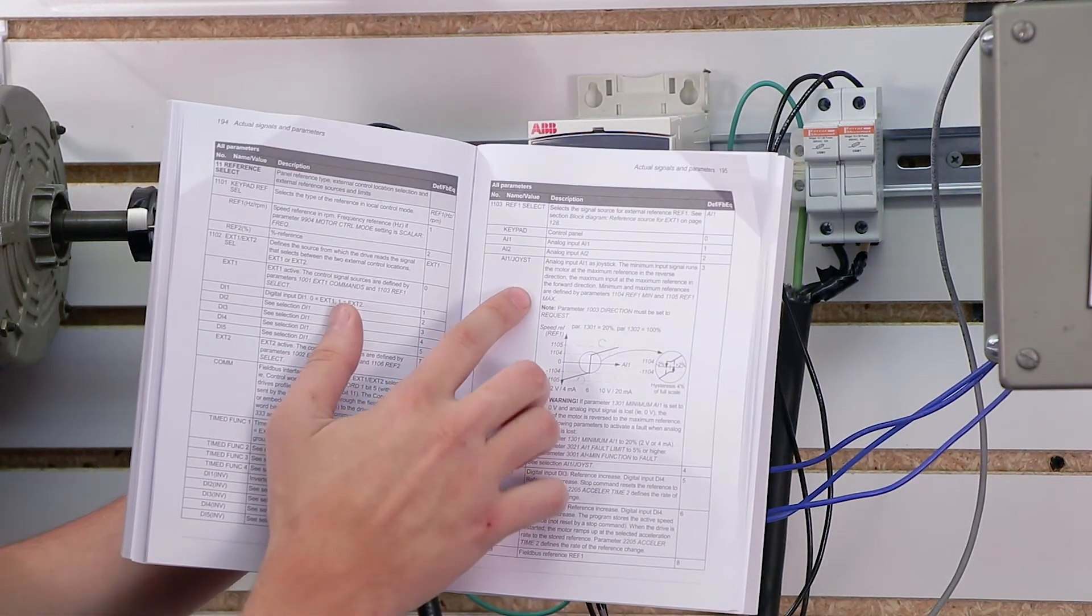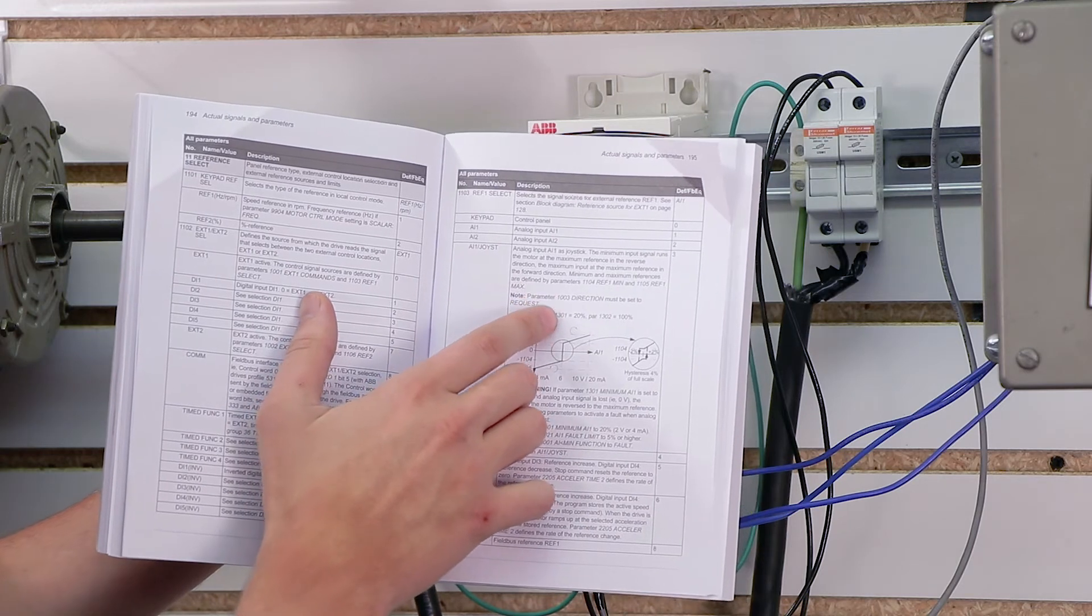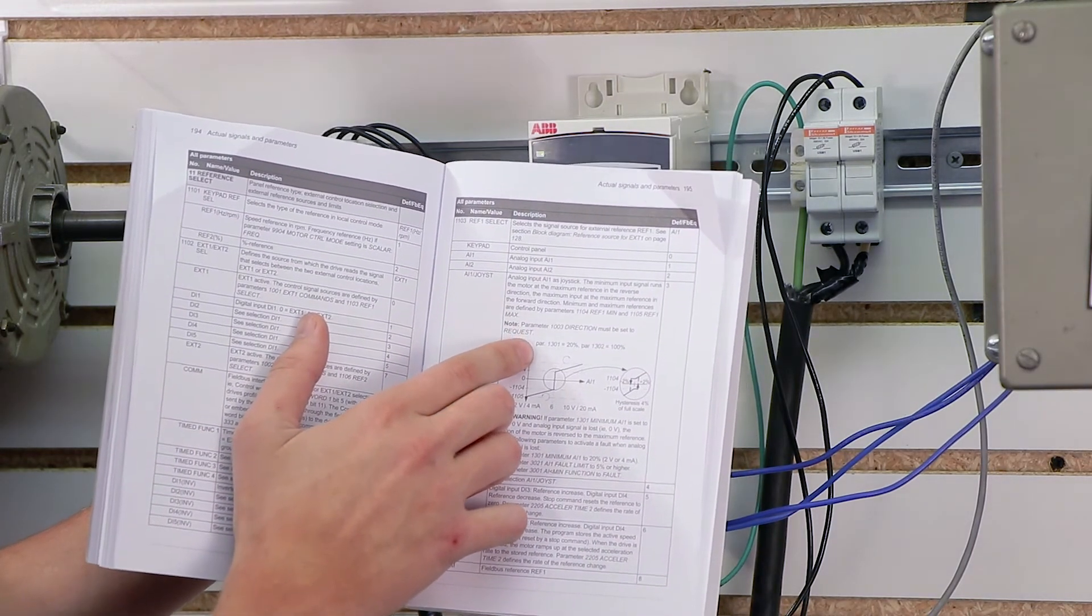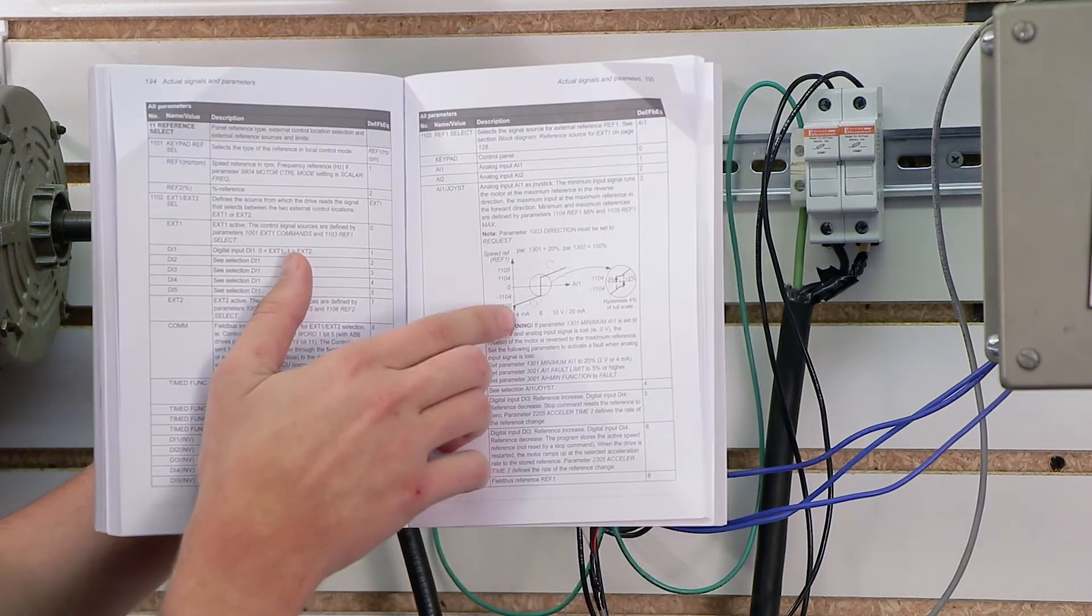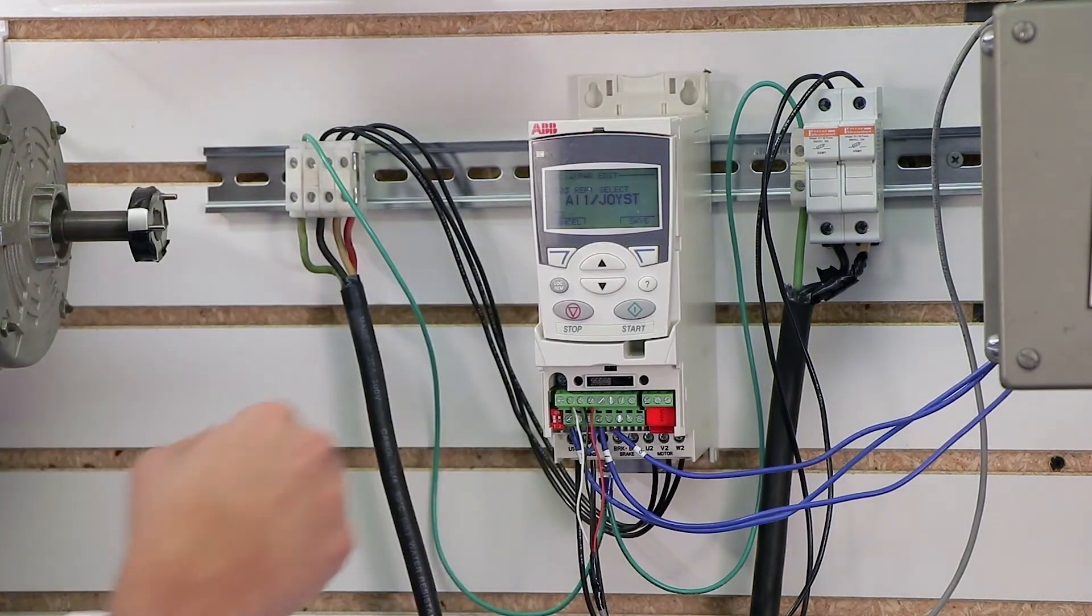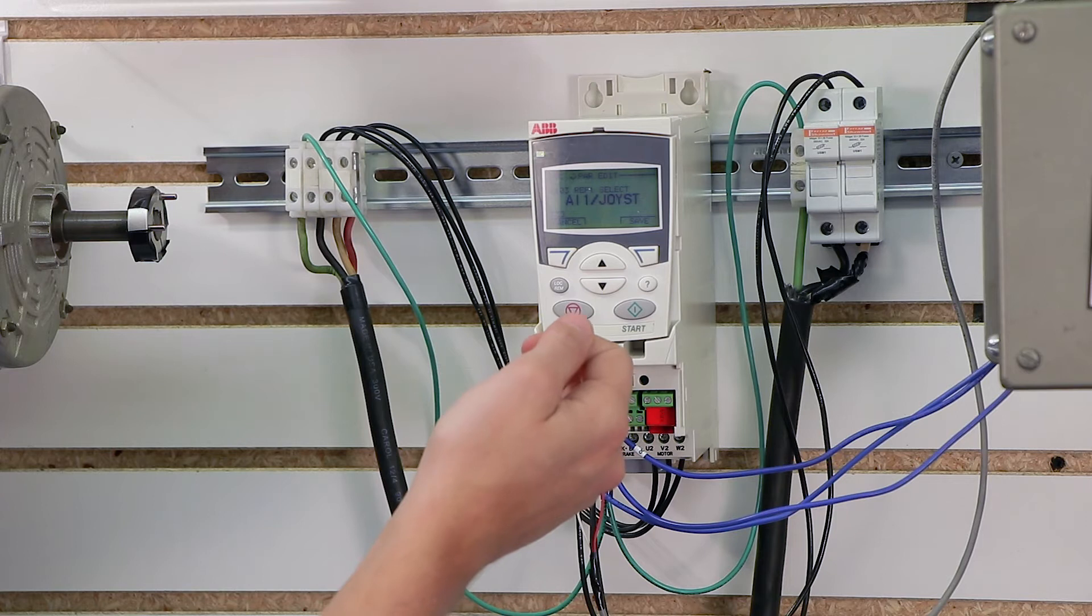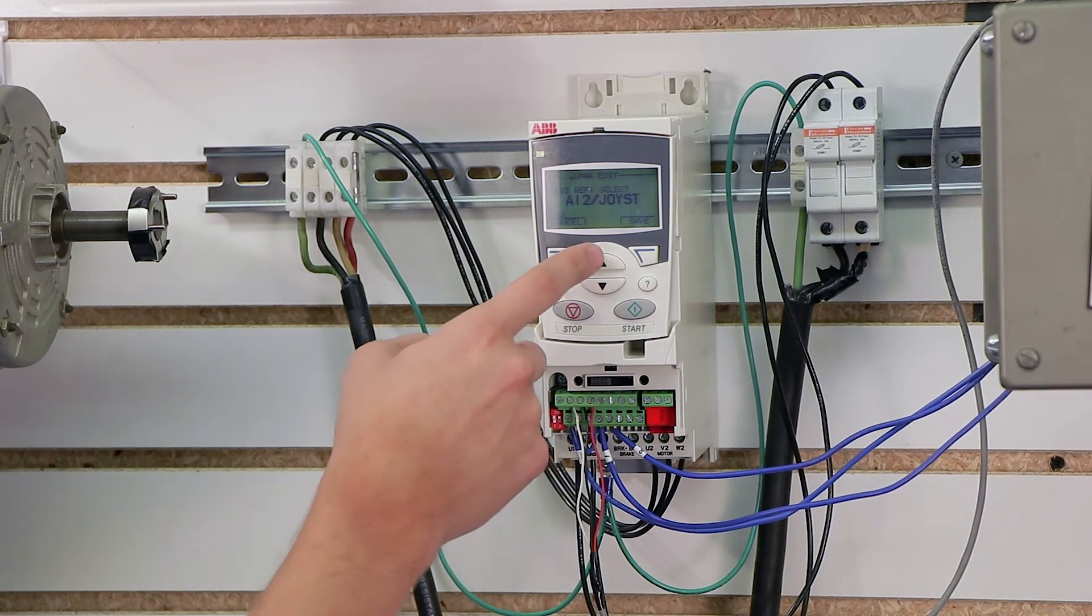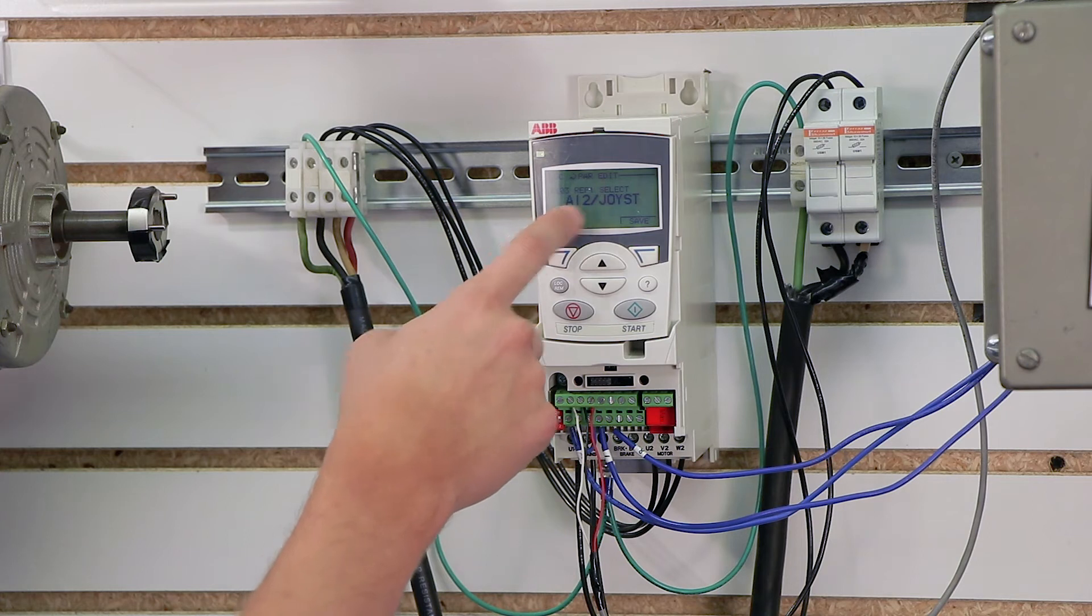Analog input 1 joystick gives you the option to actually not only adjust the speed but the direction with a custom joystick input. Let's say that's the kind of controller you have with your machine. There's actually a preset for the speed reference just for that. We also can use that on analog input 2 joystick.